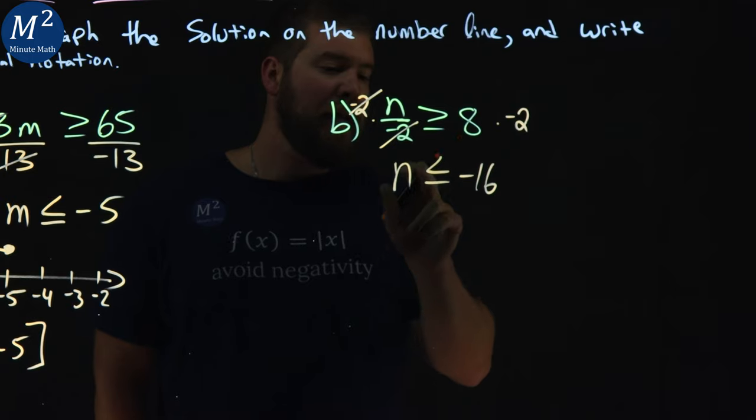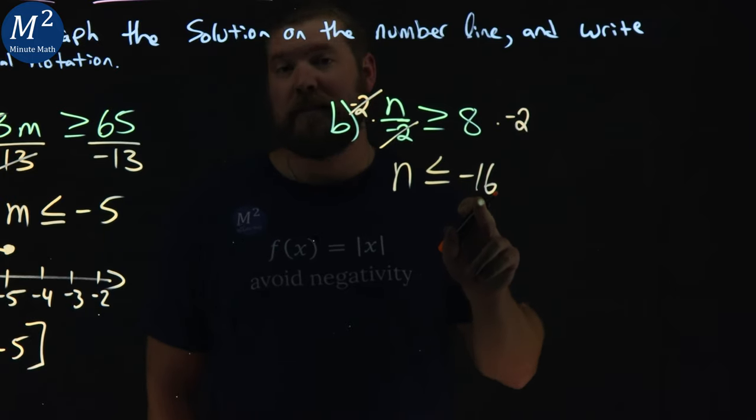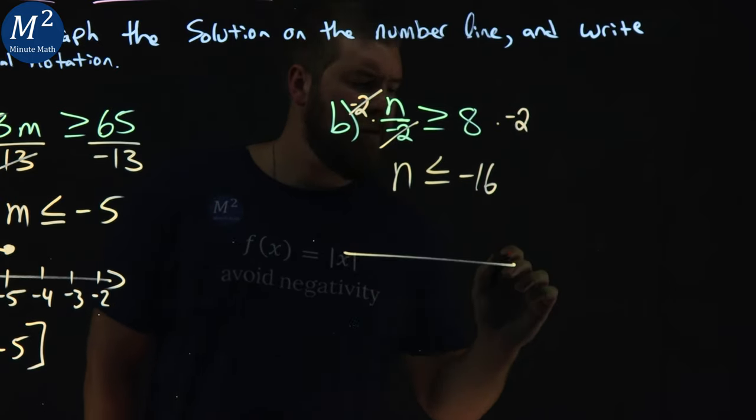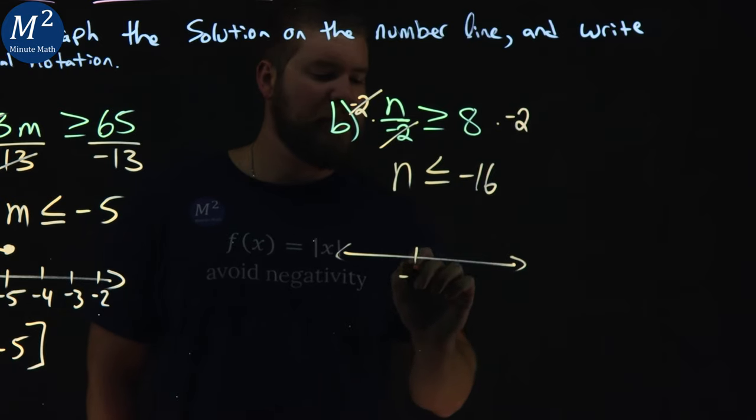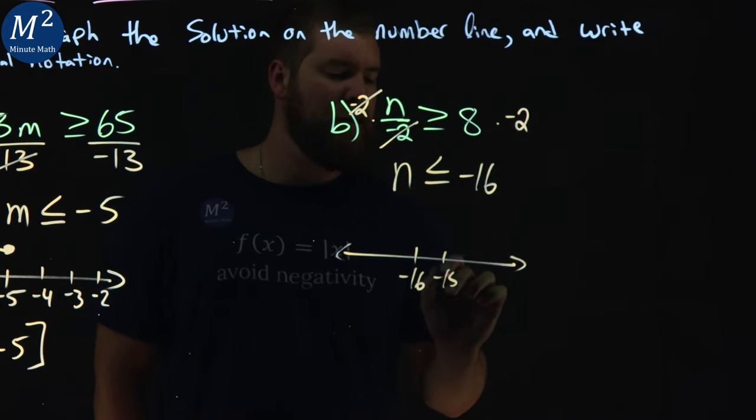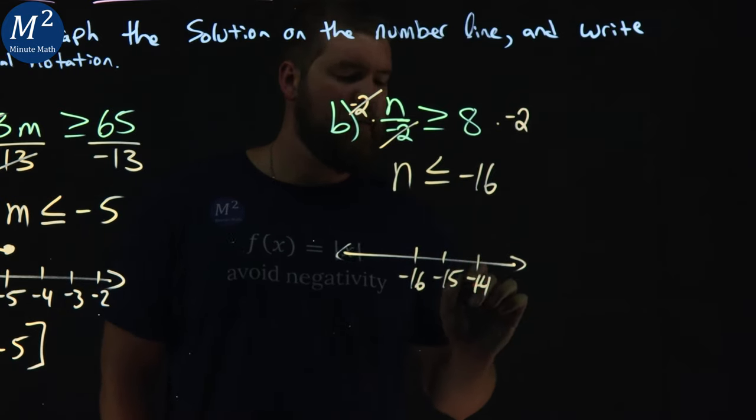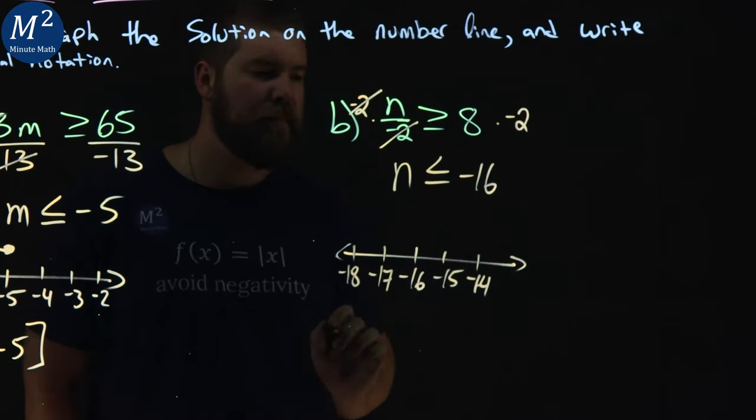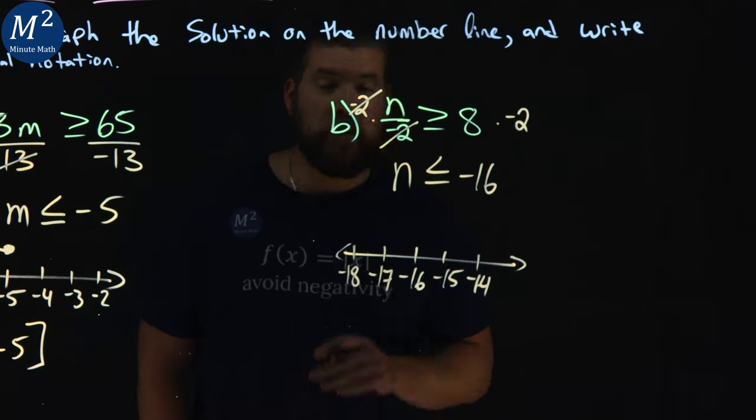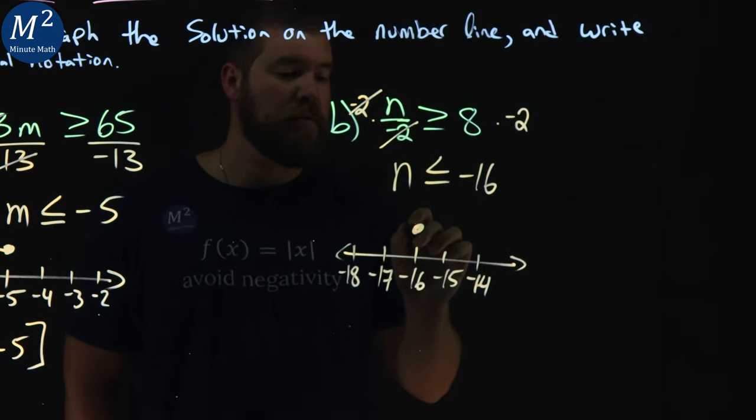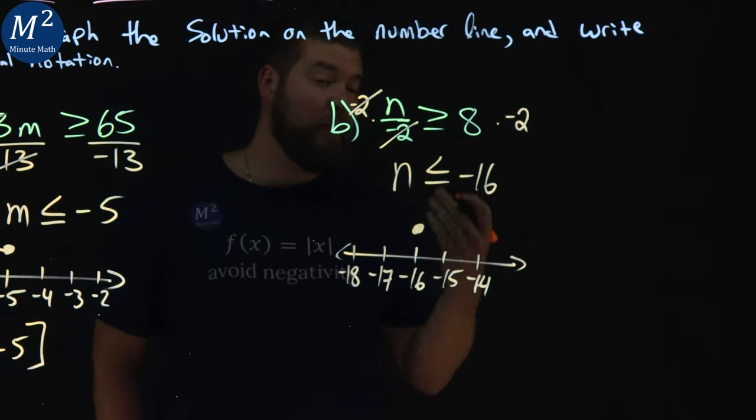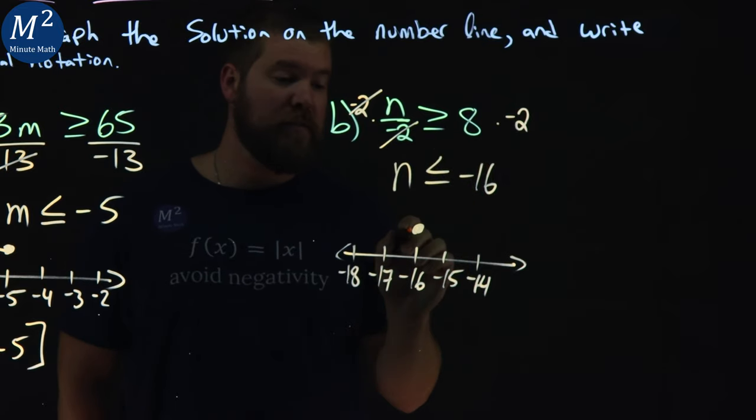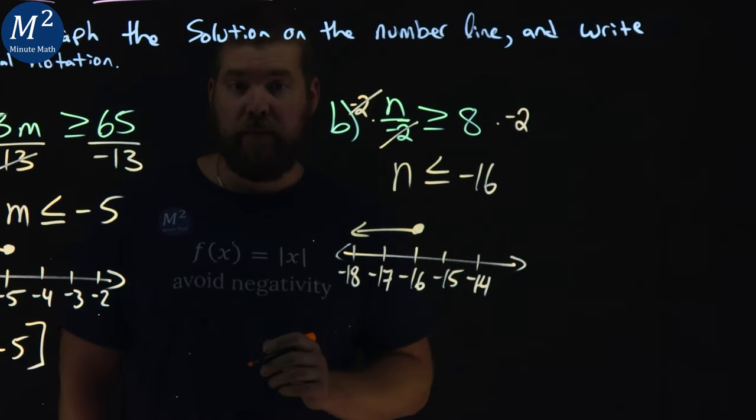Let's graph this inequality. Let's put negative 16 right in the middle. To the right, negative 15, negative 14. To the left, negative 17 and negative 18. Now n equals negative 16, which means we put a closed circle right there. N is also less than negative 16, so the arrow goes to the left. We have our graph now.